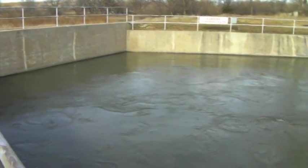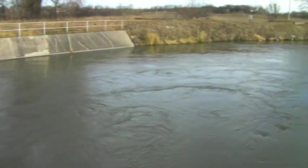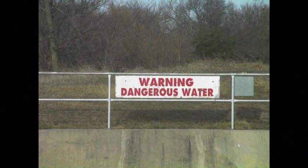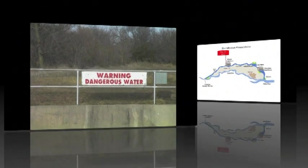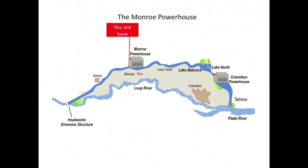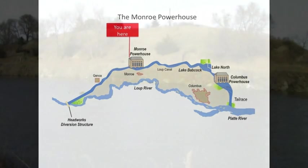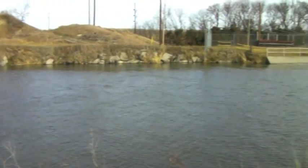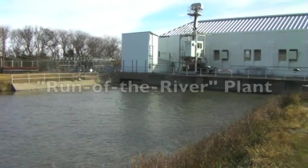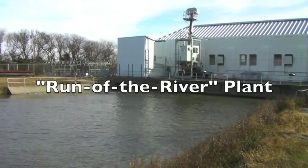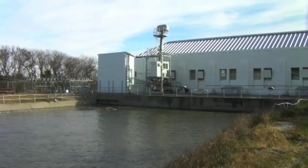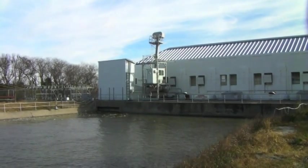You can tell by looking how strong the current is in this location. This would not be a safe place to be in the water. Here, the canal reaches its first major destination, the Monroe Powerhouse. The Monroe Powerhouse is called a run-of-the-river plant, which means the natural flow and the elevation drop of the water is what causes the turbines to spin so that the generators can produce electricity.